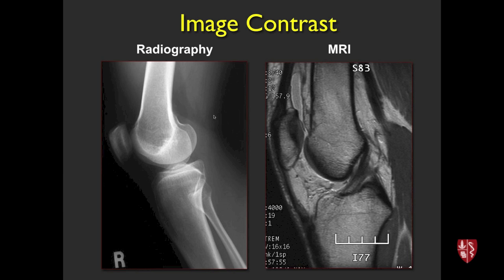What we're trying to achieve is image contrast. On radiography or x-ray, you have good contrast between bone and non-bone, but within soft tissues you don't see planes between muscles and fat very well — you don't see ligaments or tendons. On MRI, using a similar sagittal view of the knee, you see inside the bone, see ligaments, see fluid, and all of that. They are complementary techniques.